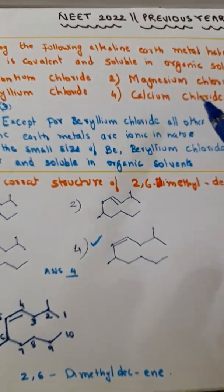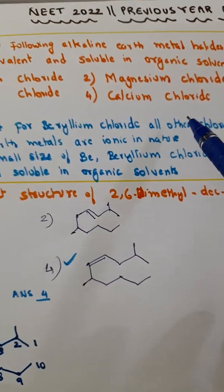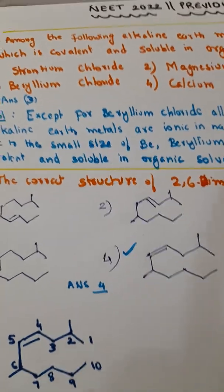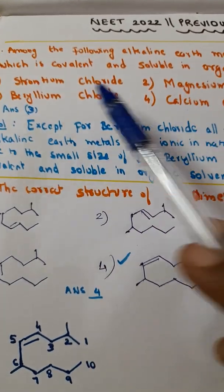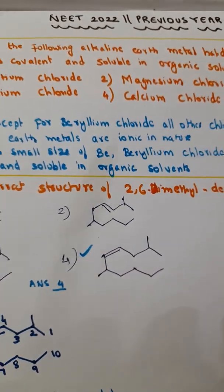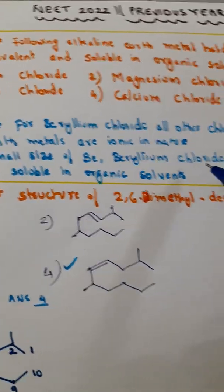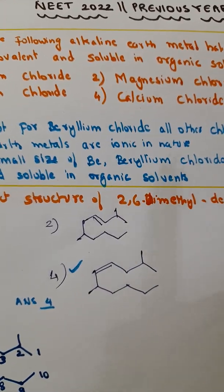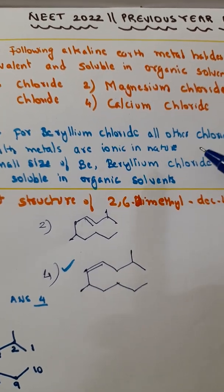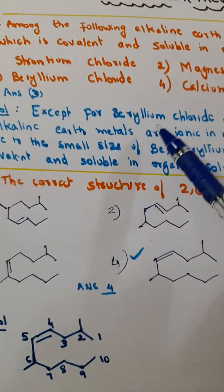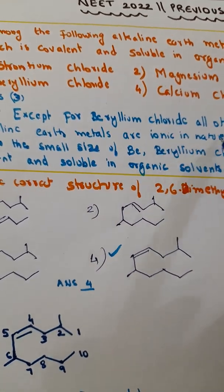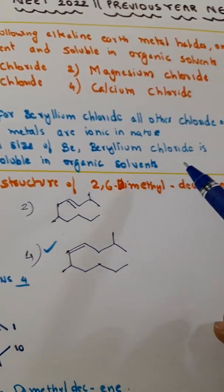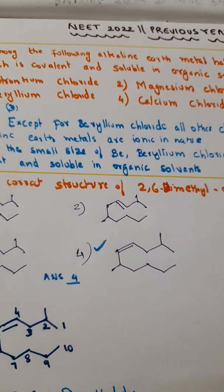What is the correct answer for this question? It is answer option 3, that is beryllium chloride. You see, except for beryllium chloride, all the other given options - strontium chloride, magnesium chloride, calcium chloride - all these alkaline earth metals are ionic in nature. Because beryllium is a small size, because of the small size of beryllium, beryllium chloride is covalent and it is soluble in organic solvents.